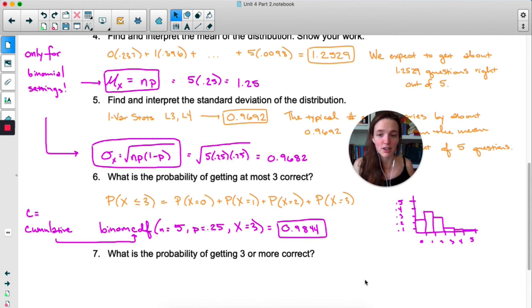So with that in mind, look at number seven. What's the probability of getting three or more correct? This is not less than or equal to, this is greater than or equal to. What's the probability of getting three or more? So three or four or five. Why don't you take a moment and see if you can figure out how to do this using binom cdf. Pause the video.